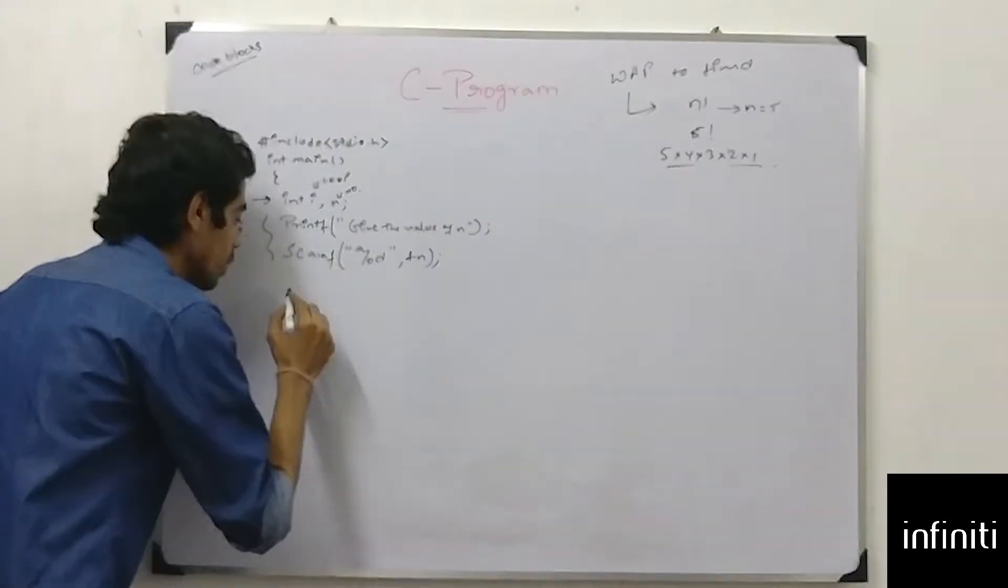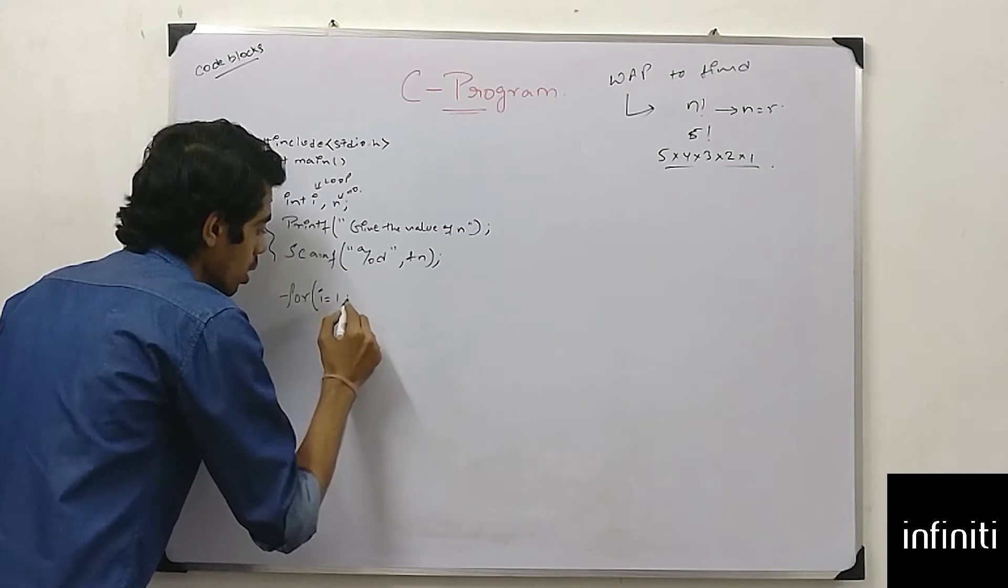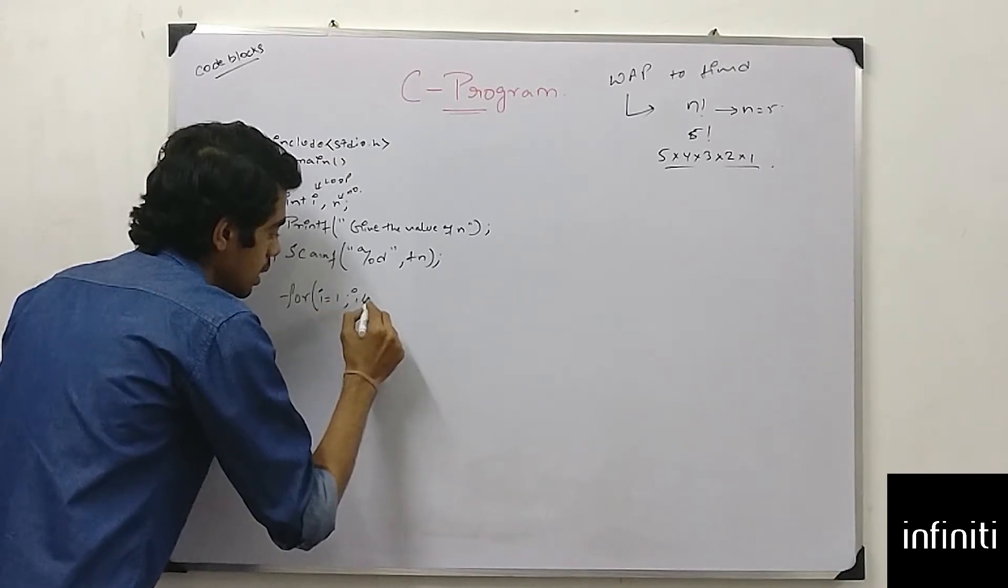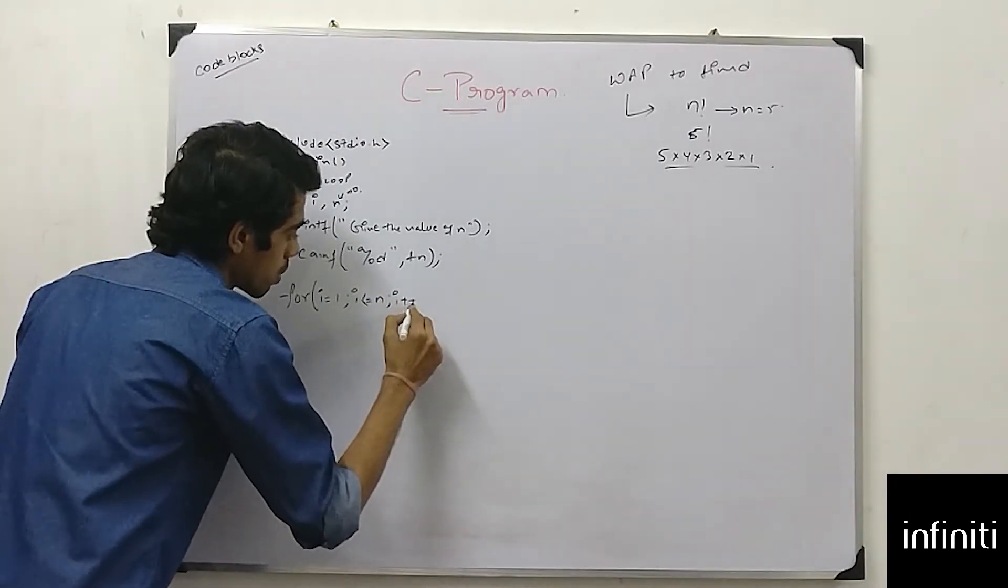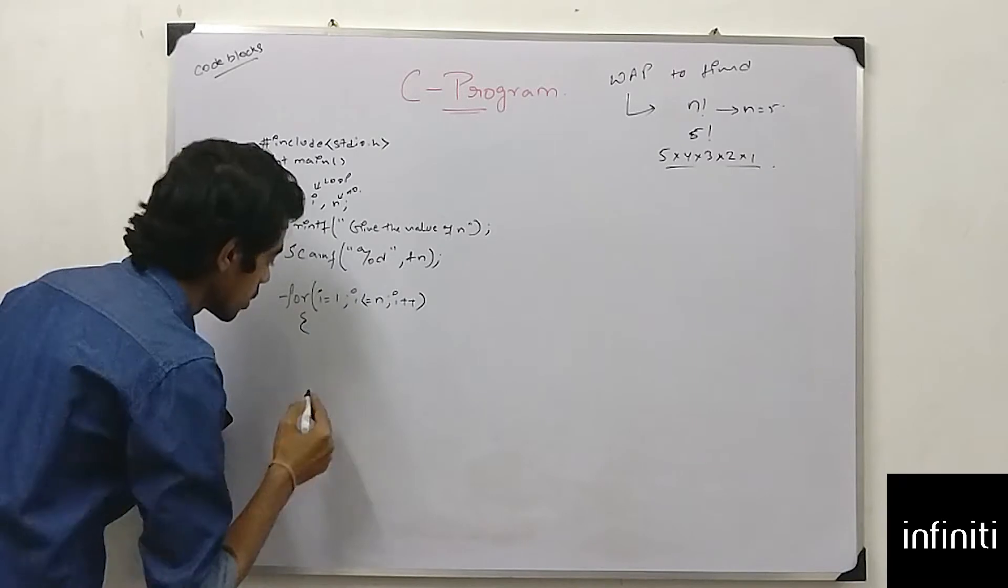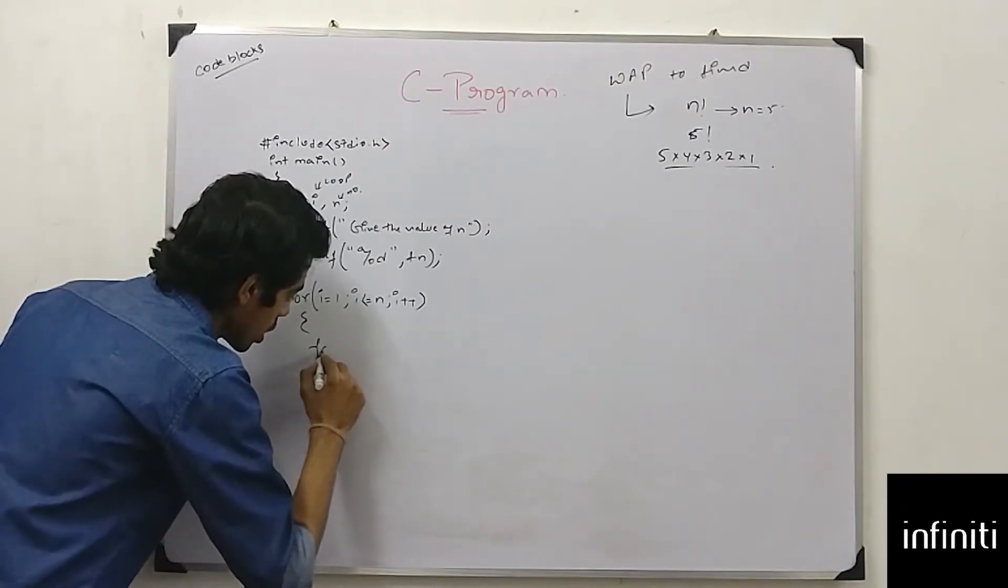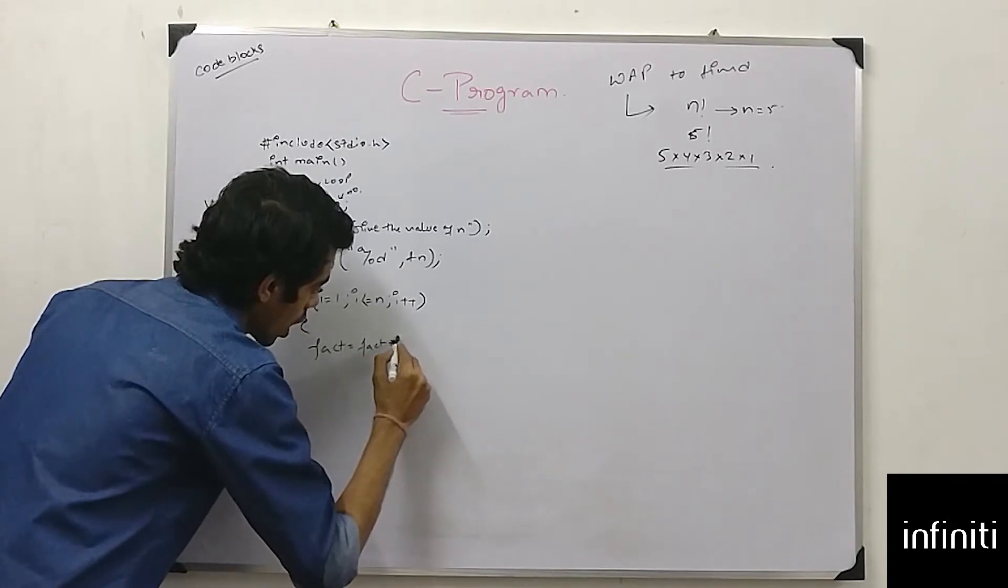So what will I do? I will just write for i equals to 1, i less than equals to n, i plus plus. And inside this, I will do factorial equals to factorial into i.